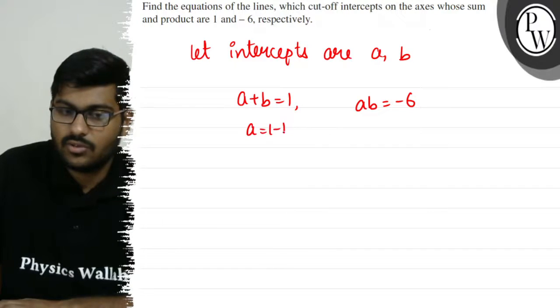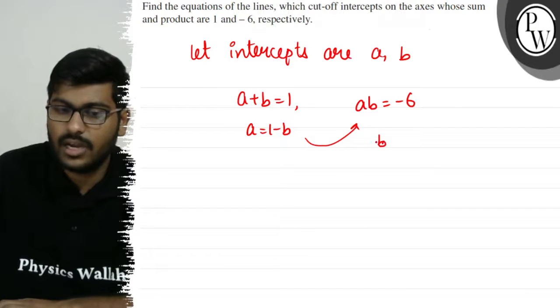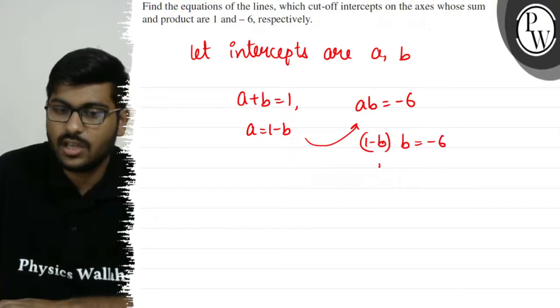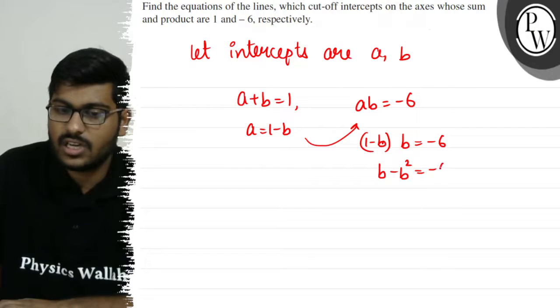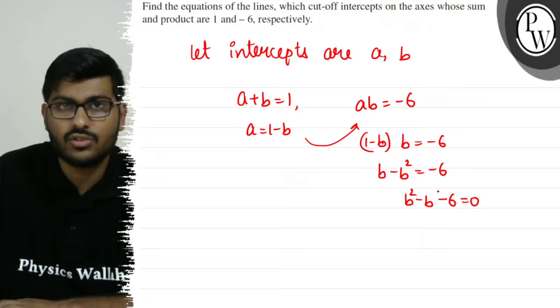We can write that a is equal to 1 minus b. We will substitute 1 minus b into the product equation: (1 minus b) times b equals minus 6. So b minus b squared equals minus 6, which gives us b squared minus b minus 6 equals 0.